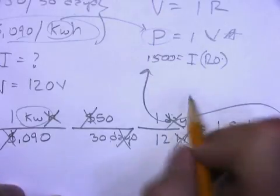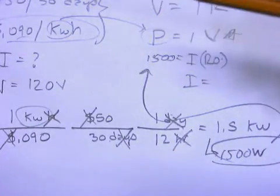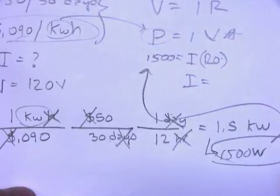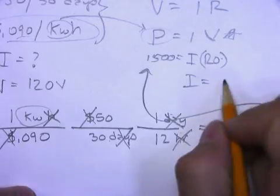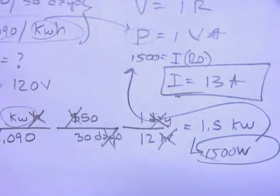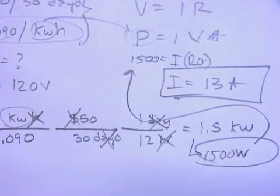And I get 12.5. So my current comes out to be, I'll use significant figures. I can only use, looks like 2, I guess maybe even 1, or 12. Let's go with 13 amps. I didn't check it out in the book, I didn't have time. So but that's my current.